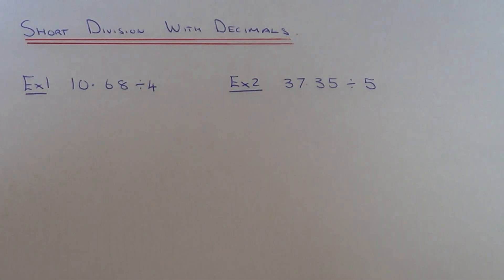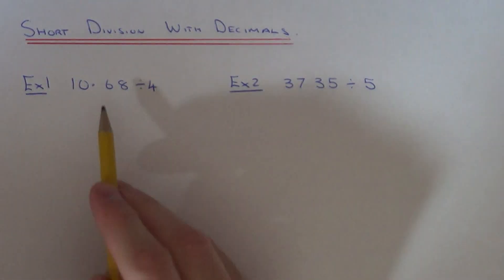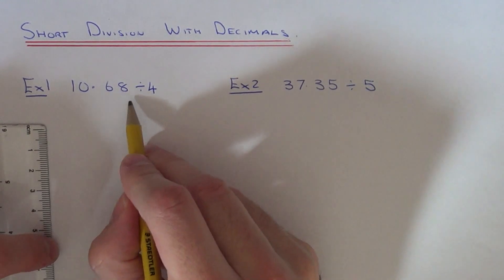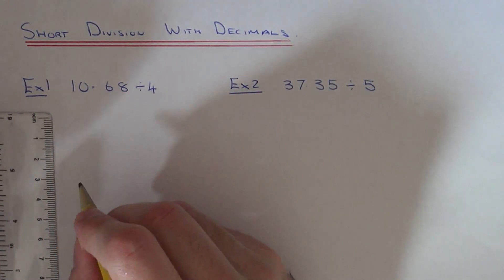Today I want to show you a couple of examples on how to divide a decimal number by a whole number. In our first example we've got 10.68 divided by 4.